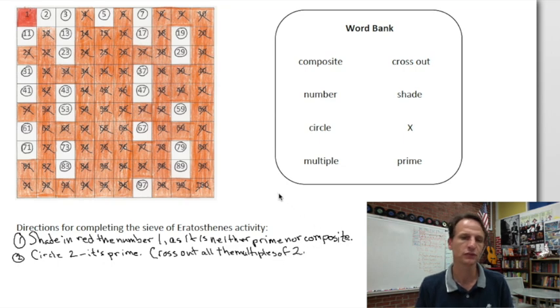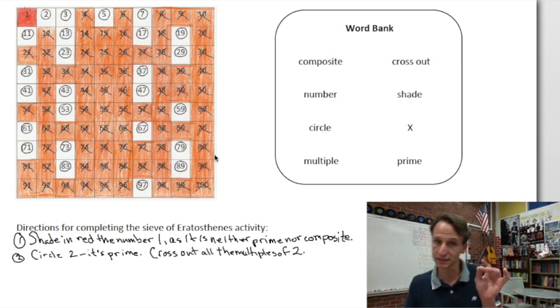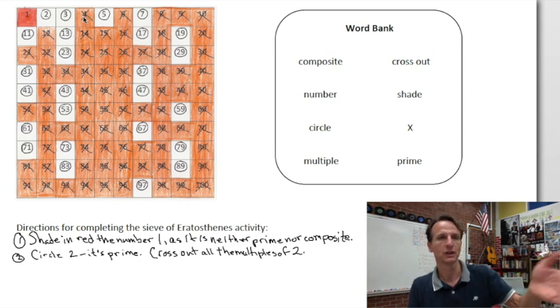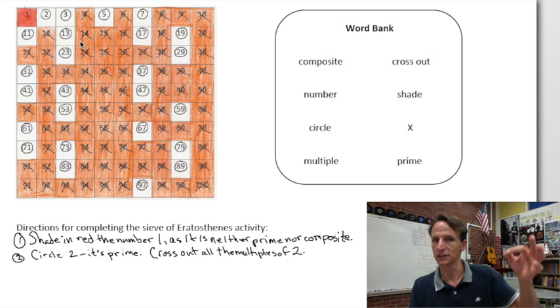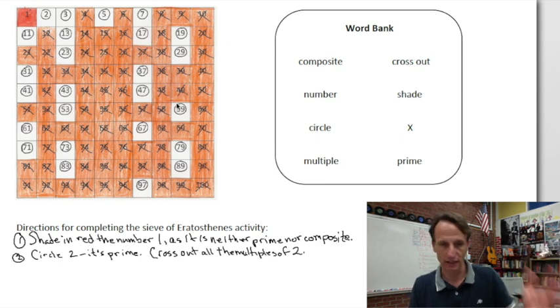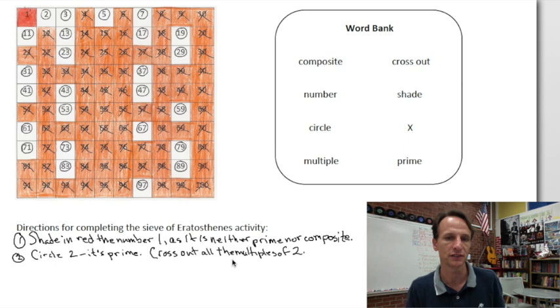Because if it's a multiple of two, that means it has one and itself as factors, but also at least two. So take four, for example: one times four, two times two. Its factors are one, two, four. It's composite. Look at six: one, two, three, and six. It has more factors than one and itself. It's composite. And on for the rest of the even numbers. So all the multiples of two, all the even numbers after two are composite.